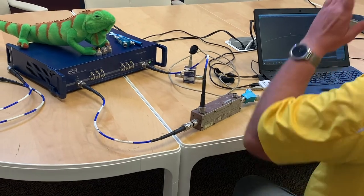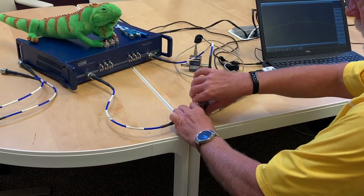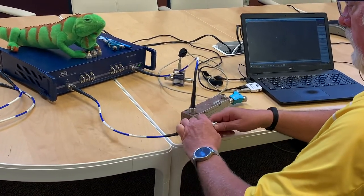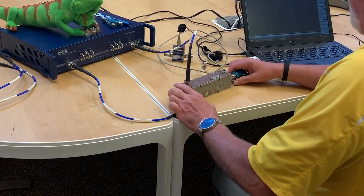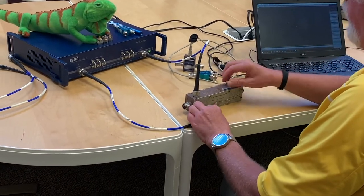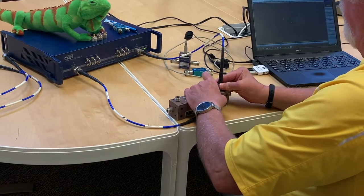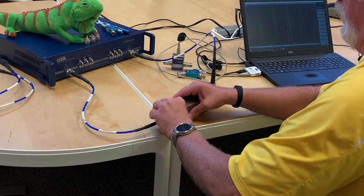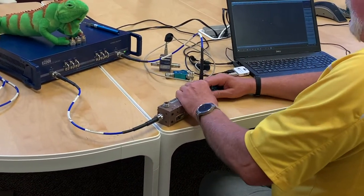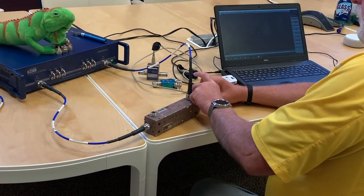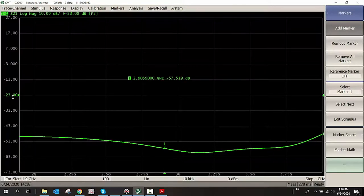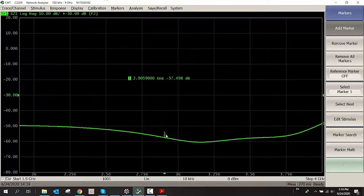And now let's look at the directivity. Theoretically, if I turn this coupler around and feed it, I should not see any signal on this port. But we will see one. And that's a small error, but it's important to know what it is. That will be the raw directivity of my bridge. And I need to load the output here.